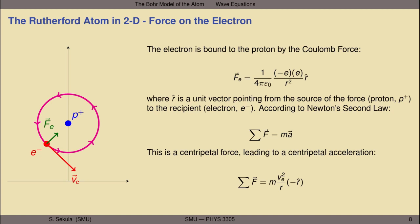Let's consider the Rutherford atom, but let's simplify the calculations and only think about an electron going around a single proton — a hydrogen-like atom, but only in two dimensions. The electron is bound to the proton in a circular orbit by the Coulomb force, in the same way that the earth would be bound to the sun by the gravitational force in our solar system. So the electron would be orbiting the proton, the proton would be the central force emitter in this problem, the electron would be responding to that force — the electric force, the Coulomb force. That force is given by this formula.